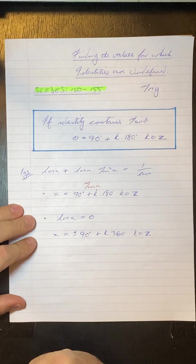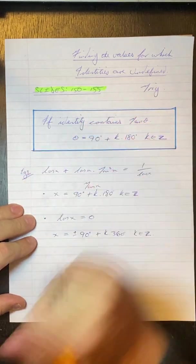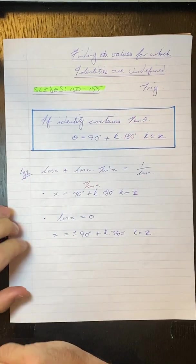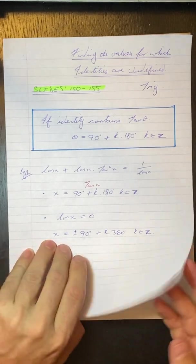So it'll be plus or minus 90 degrees plus k 360 where k is an element of the integers. And those are two general formulas for when this identity would be undefined.